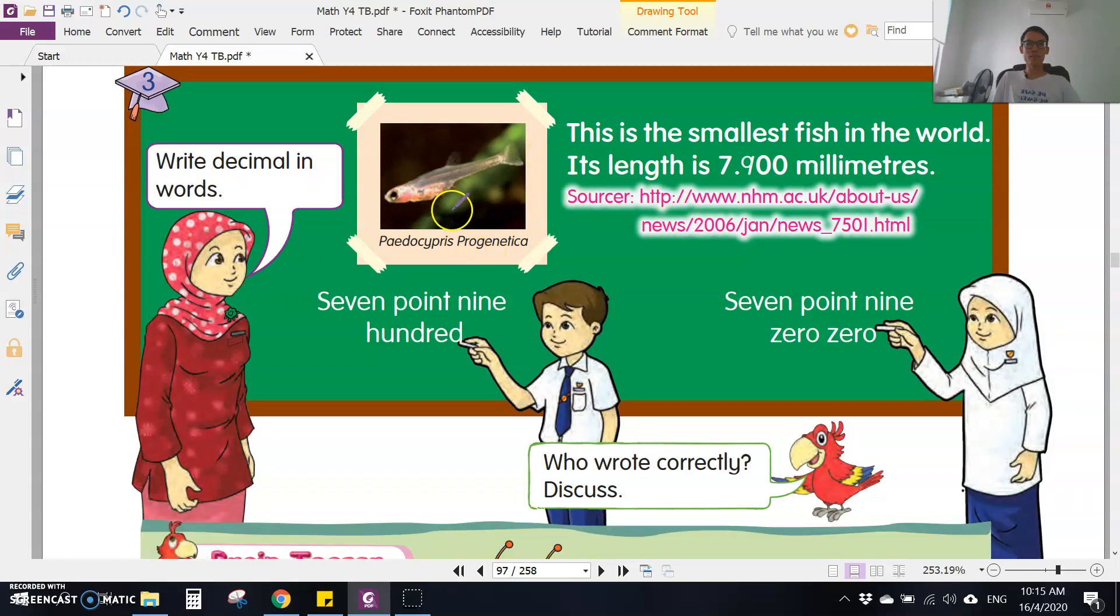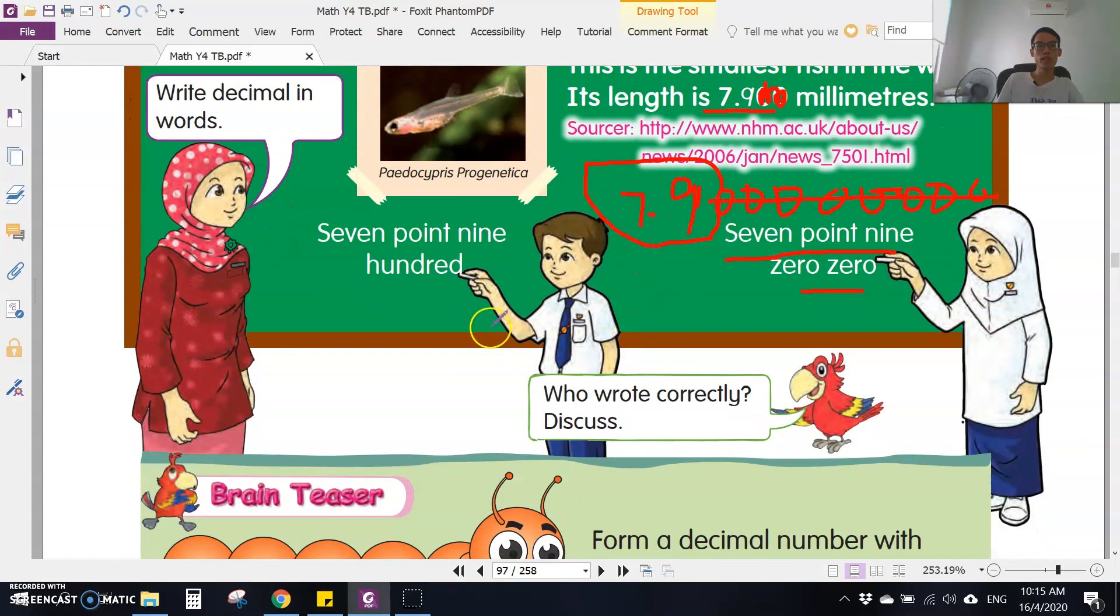This is the smallest fish in the world. The length is seven point nine millimeters. The zeros behind actually have no value. You can just write seven point nine. Even if you put a lot of zeros behind, they have no value. So you can just write seven point nine, tujuh perpuluhan sembilan.